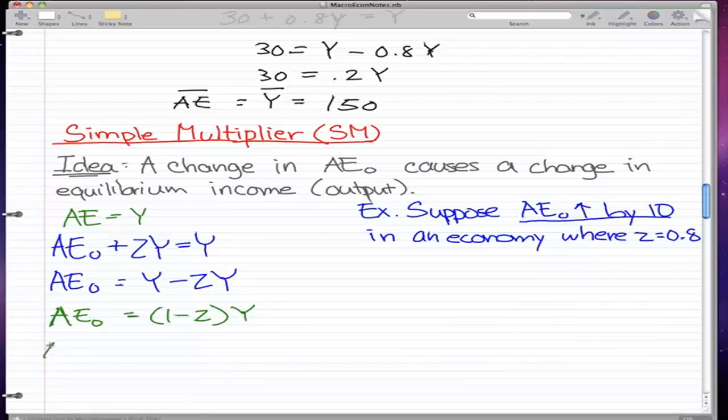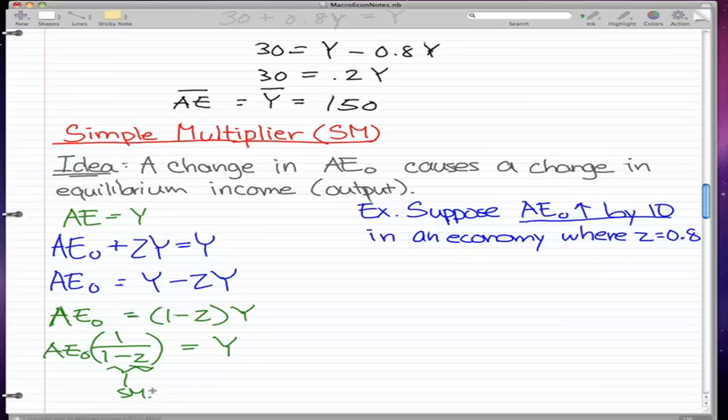If we times both sides by 1 over 1 minus Z, we get AE0 times 1 over 1 minus Z equal to Y. And this would be our simple multiplier.